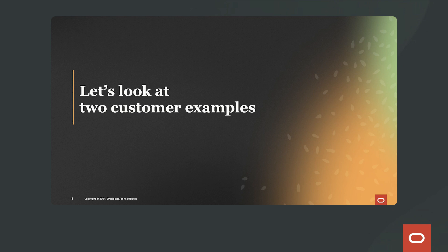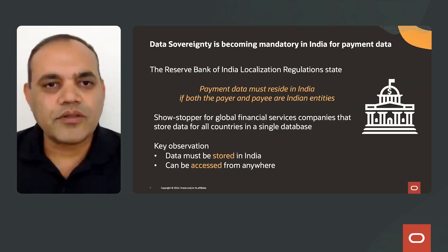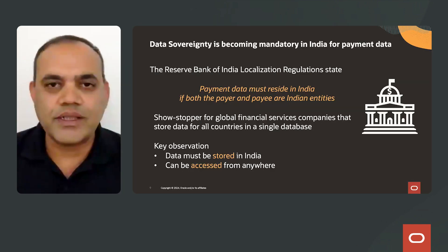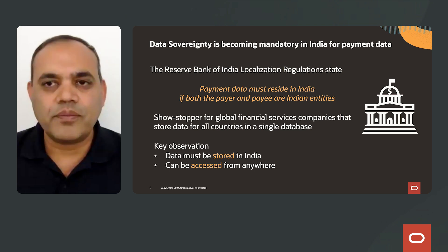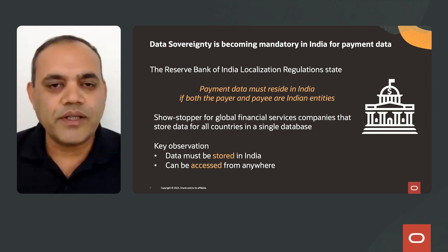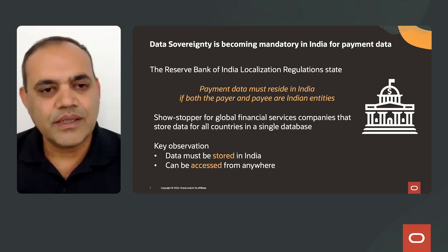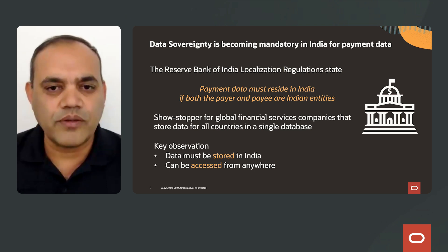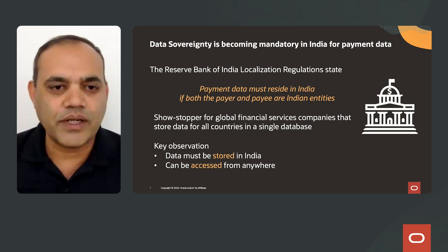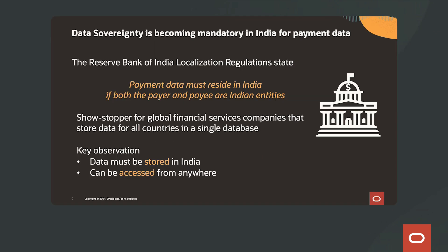Data sovereignty is becoming mandatory in many countries, like India for payment data. The Reserve Bank of India data localization regulations state that payment data must reside in India if both the payer and the payee are Indian entities. This is a showstopper for global financial services companies that store data from all countries in a single database. The key observation is that data must be physically stored in India, but it can be accessed from anywhere.